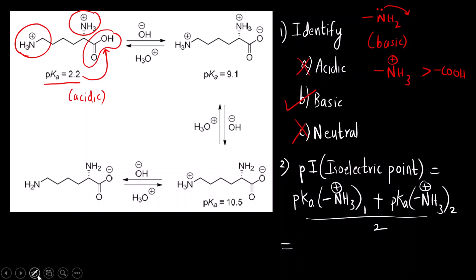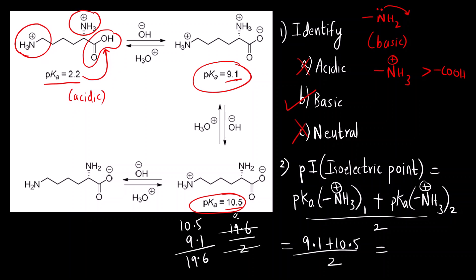You add the two values for the amine groups, the ones which are higher because that is less acidic, that means they are basic. Nine point one plus ten point five. Nine point one plus ten point five divided by two. That is nineteen point six, and nineteen point six divided by two is nine point eight.